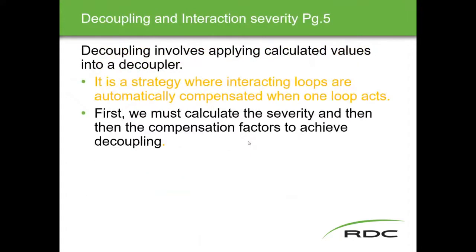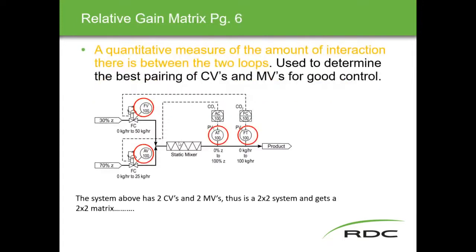Starting out with the calculations — calculating the severity of loop interaction, and from that we get the compensation factors to achieve decoupling. We look at process variables PV1 and PV2, and controlled variables CO1 and CO2. This system has two controlled variables and two manipulated variables, so we call this a two-by-two system, and as a result we get a two-by-two matrix.